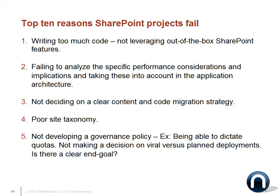Number two: failing to analyze the specific performance considerations and implementations and taking them into account in the application architecture. Number three: not deciding on clear content and code migration strategies. SharePoint is a different animal — it's really a two-tier architecture instead of a three-tier or n-tier architecture, and has different content and code migration constraints. It's important to decide on your strategy for pushing content and code through the different levels of development, staging, production, and testing.